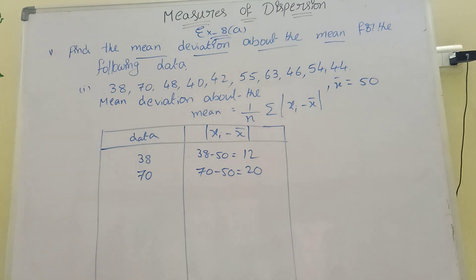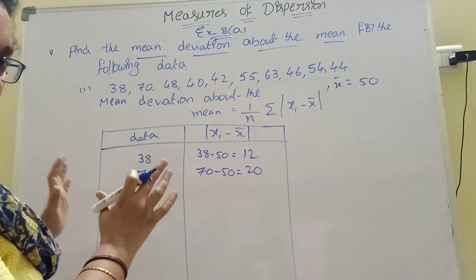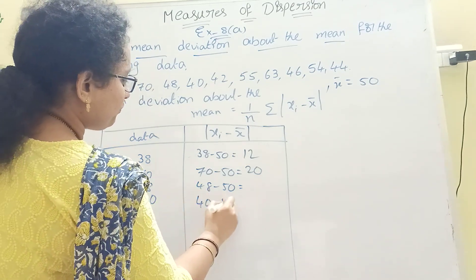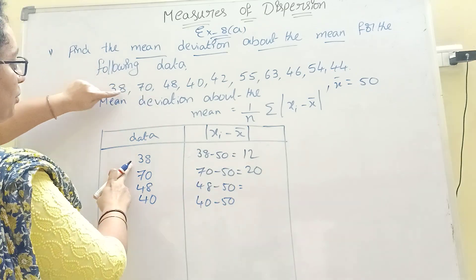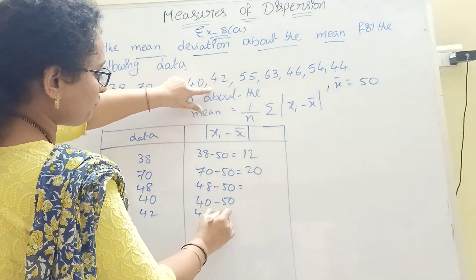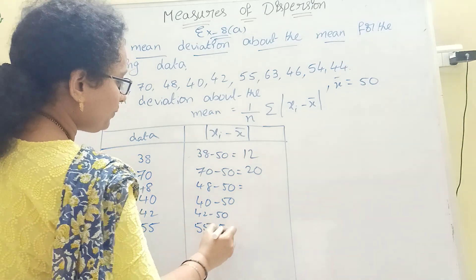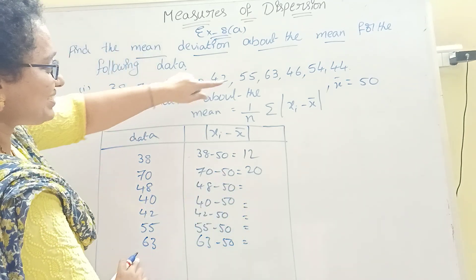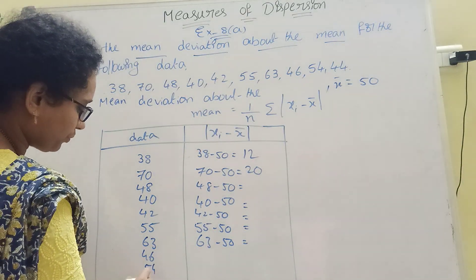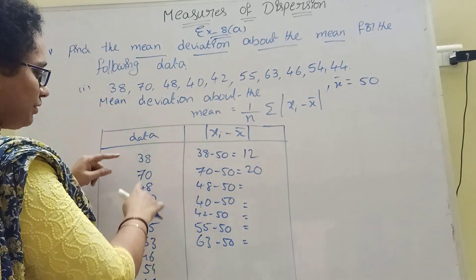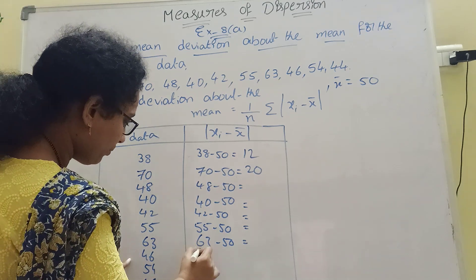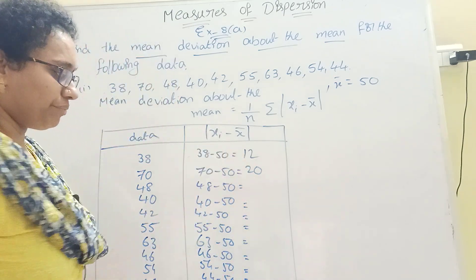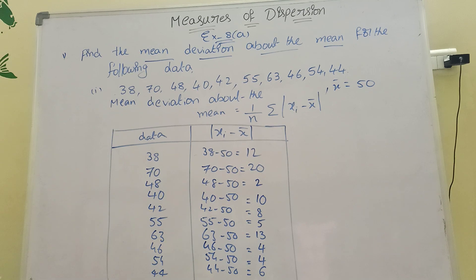Like that, calculate every number: 48 − 50 → 2, 40 − 50 → 10, 42 − 50 → 8, 55 − 50 → 5, 63 minus, 46 minus, 54 minus, 44 minus. We have 10 numbers total — don't miss any. Write 46 − 50, 54 − 50, 44 − 50 accordingly, then write all the answers.